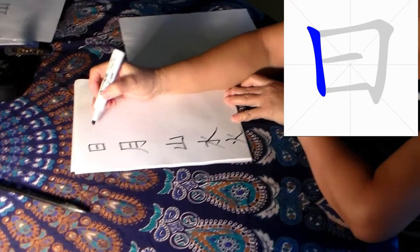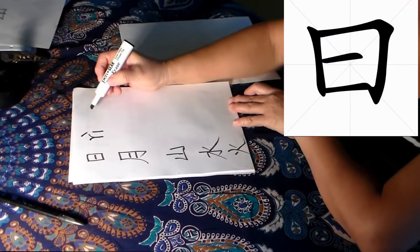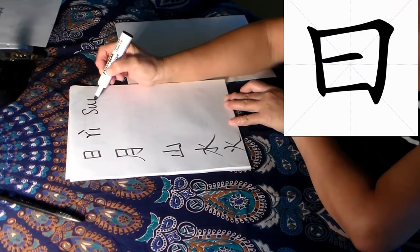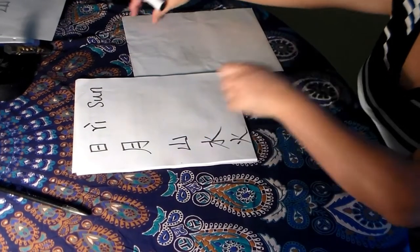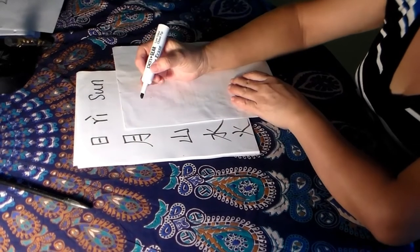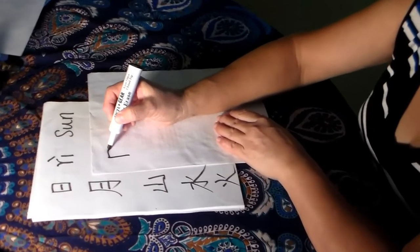This is yu. Yu, fourth tone. Sun. See? This character, Chinese character, is like either square, either rectangle.